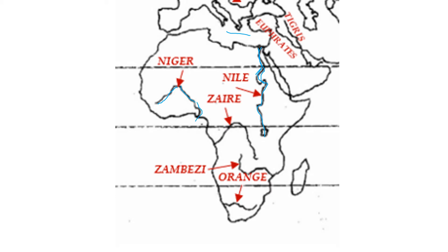Below Niger there are two rivers that again start with Z — this is Zaire and then Zambezi. And below this there is a small one called Orange. So in the African continent we have learned five rivers: two with N — Nile and Niger; two with Z — Zaire and Zambezi; and one Orange.